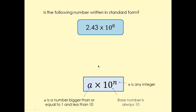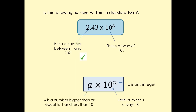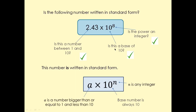Let's have a look at this example. Is this number between 1 and 10? Yes, regardless of whether it's a decimal. Base of 10? Yes, tick. And the power or index is an integer — a whole number — so we can tick that box as well. Yes, this number is written in standard form.